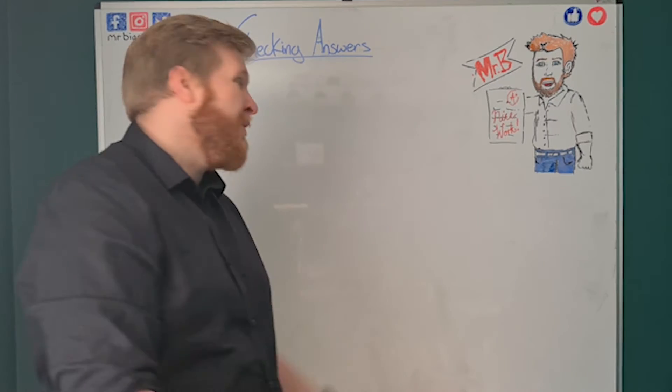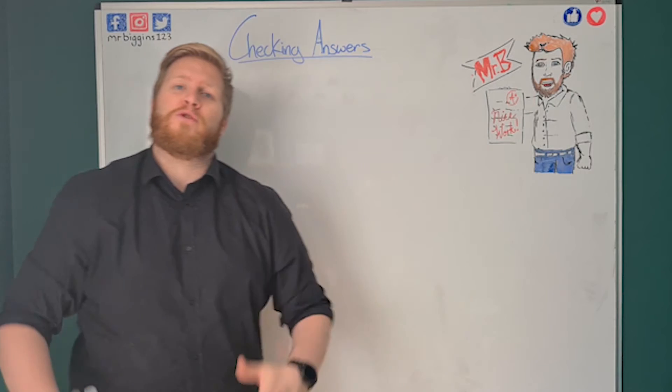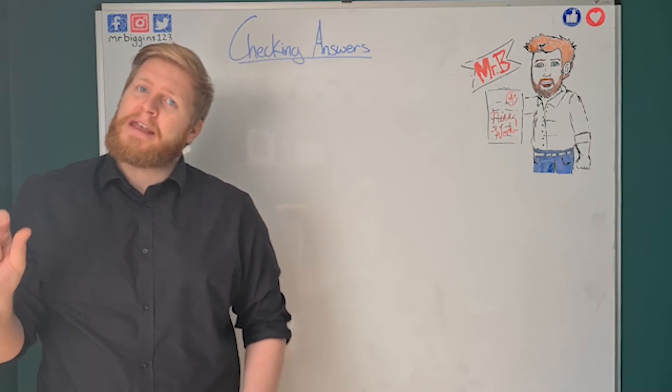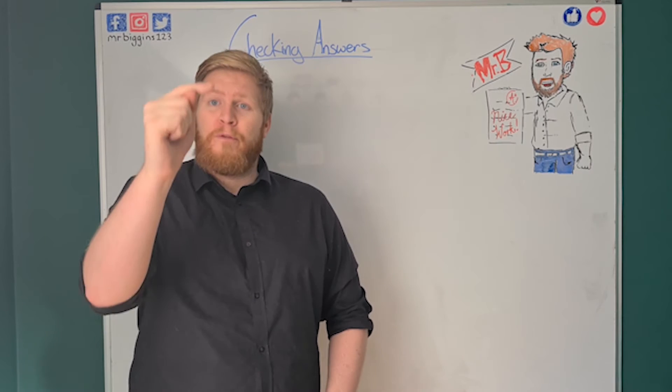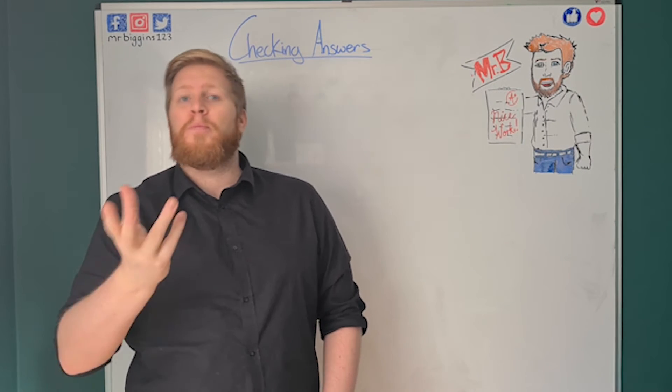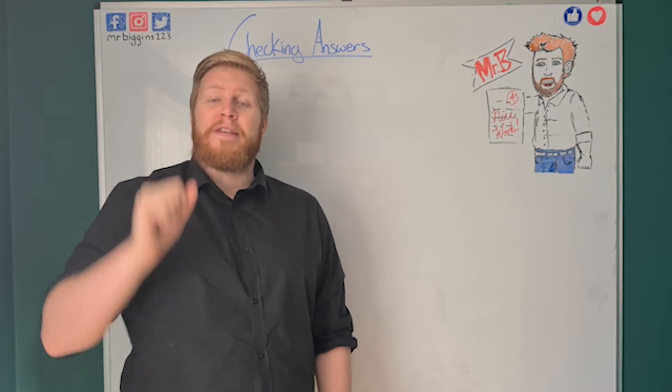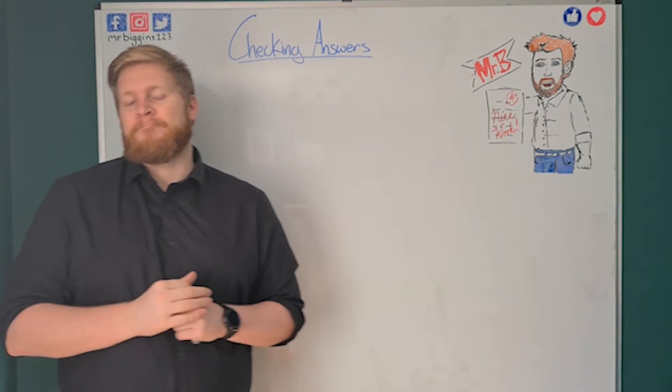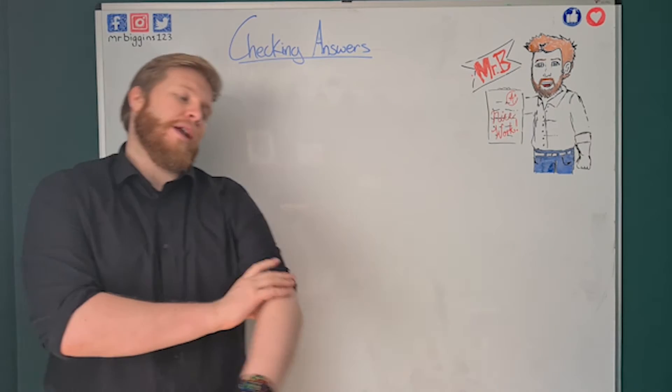Now, the first way I'm going to tell you, I'm not going to use my board, I'm just going to tell you because it's quite simple. The easiest way to check your answer is to do a sum again. Do a sum again, following through what you've already done or whatever word problem it is, and make sure you get the same answer. If you get different answers, then you might have made a mistake. That's our first simple way of checking.